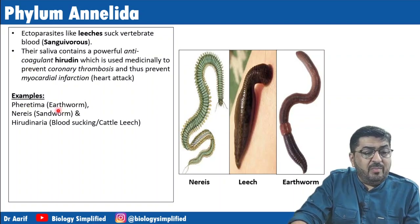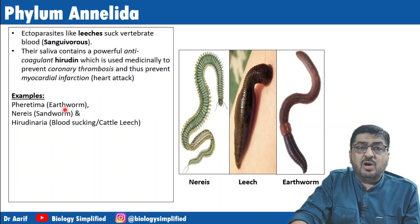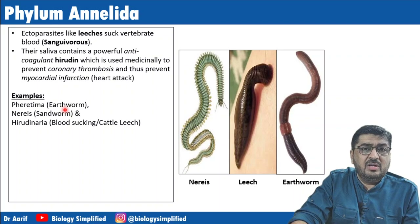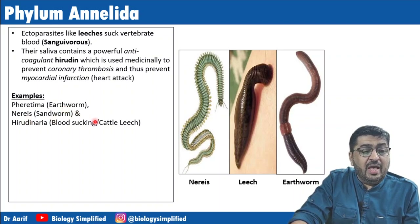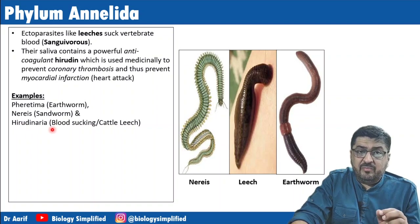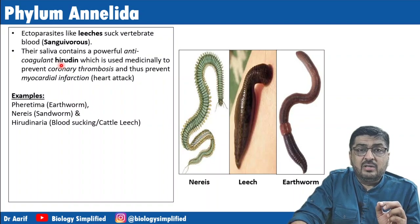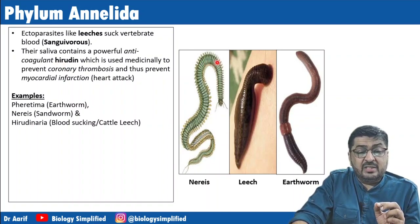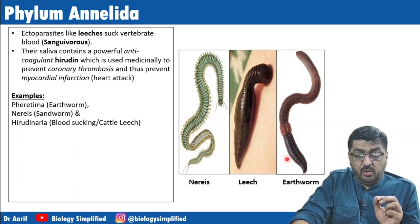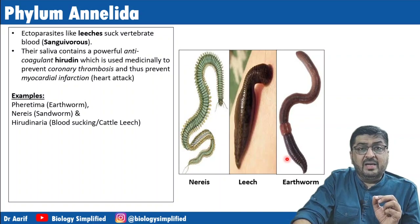The examples in Annelida are: Pheretima posthuma, which is the earthworm; Nereis, which is sandworm; and Hirudinaria, which is the name for leech. The anticoagulant is called Hirudin, so the leech is named Hirudinaria. I hope all the points for Annelida are properly understood.